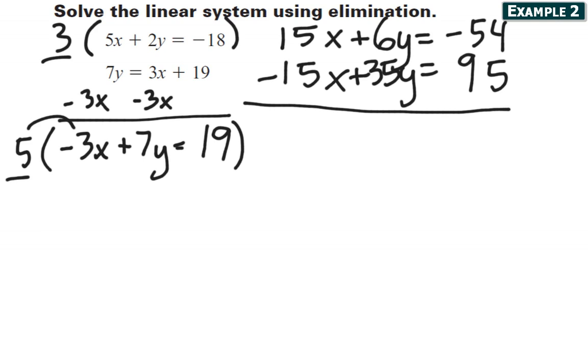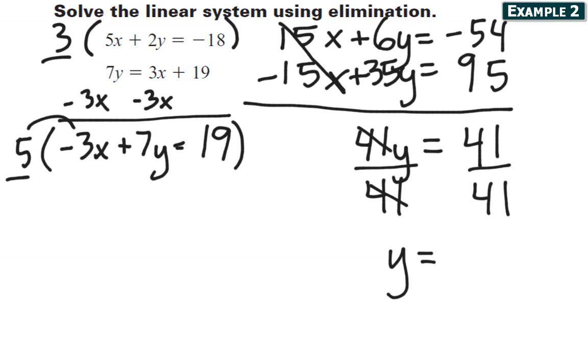So when I combine my two equations or add them together, the x terms are gone. The y terms are 41y. And when I do the addition here, negative 54 plus 95 makes 41. So I'm going to reduce 41s. Here I get 1y and here I get 1. So I've got half my answer.